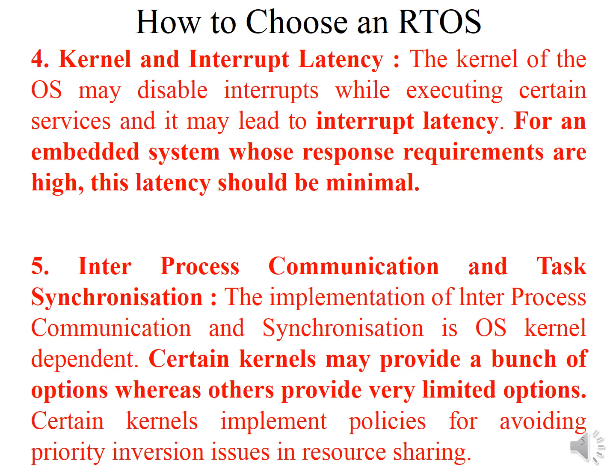The fifth functional requirement is inter-process communication and task synchronization. The implementation of IPC and task synchronization depends on the OS kernel. Options available to implement IPC include mailbox, message queue, and others. Certain kernels provide many options, while others provide limited options. Some kernels also implement policies for avoiding priority inversion issues in resource sharing scenarios, so always choose the best OS.